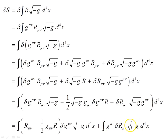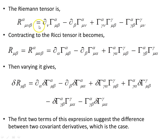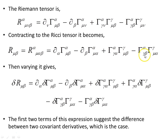Ultimately that term will go to zero and drop off, and the next sections will be concerned with showing how that happens. The Riemann tensor contracts to the Ricci tensor; contracting on the first and third indices gives us this object. Varying it gives the partial derivative times the variation of the affine connection, minus the partial derivative times the variation of the other affine connection, with two variation terms for each.